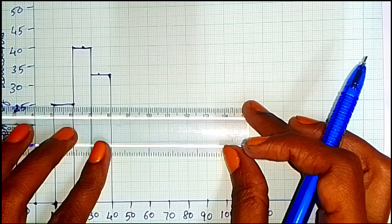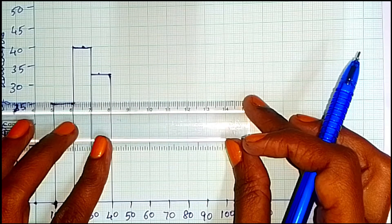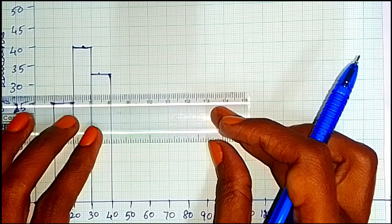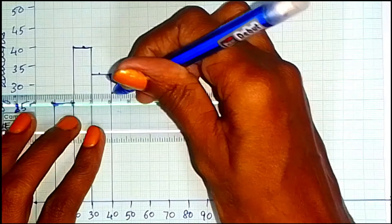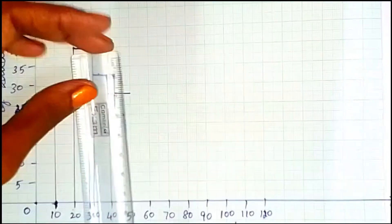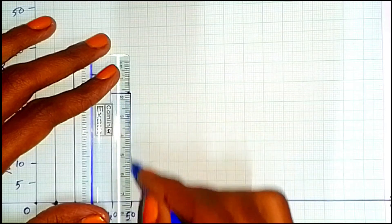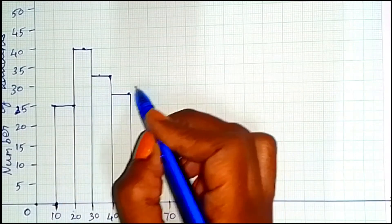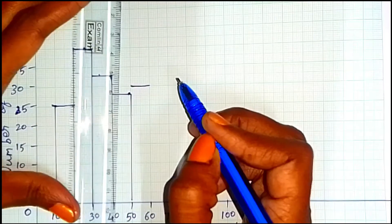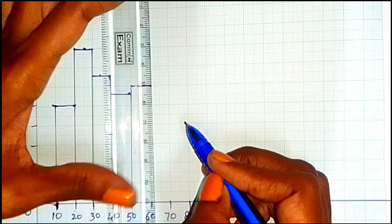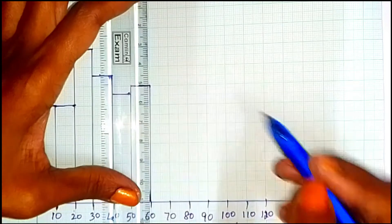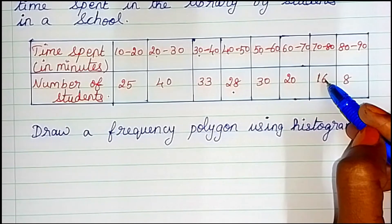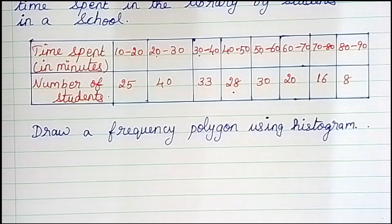So 40 to 50 has 25 students. Now the next line is 26 students, the 4th line is 27 students, and the 6th line gives us 28 students — that completes that bar. Next, 50 to 60 has 30 students, and that rectangle is complete. Then 60 to 70 has 20 students, 72 to 80 has 16 students, 80 to 90 has 8 students — so these three are complete.